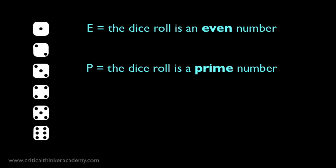Let's consider dice rolls again. Let's call E the event that the dice roll is an even number, and let's call P the event that the dice roll is a prime number. Here's what those dice rolls look like. We're interested in the probability that the dice roll is both even and prime.